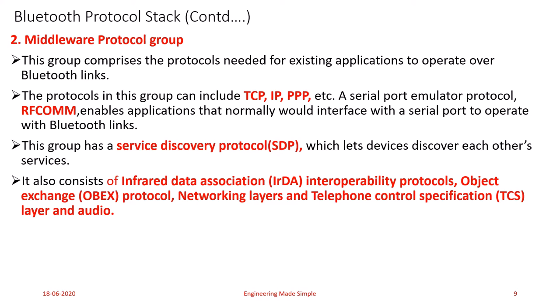RFCOMM: serial ports are the most common communication interface involving the use of cables. Since Bluetooth is wireless, RFCOMM provides a virtual serial port to applications. The advantage is that it is easy for applications designed for cable serial ports to migrate to Bluetooth using the RFCOMM layer, making it an important part of the Bluetooth protocol stack.